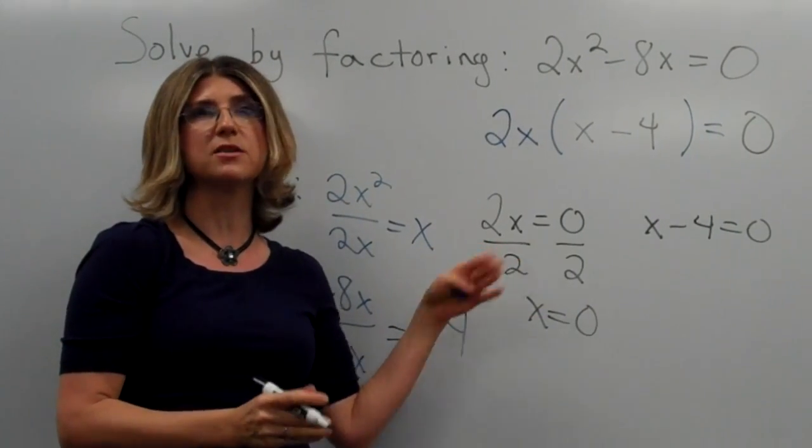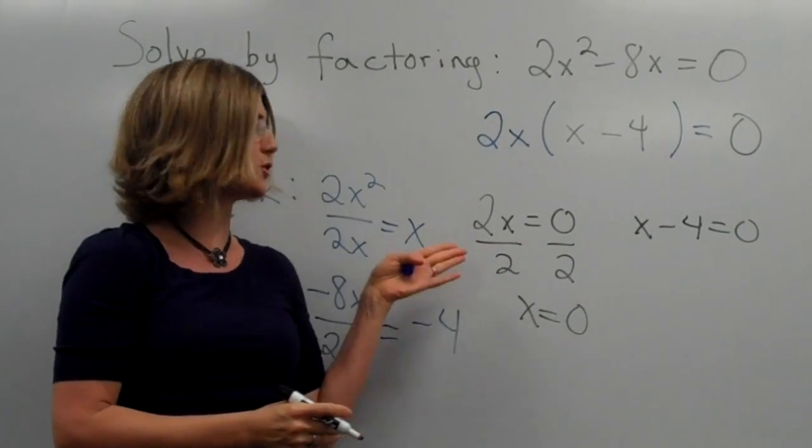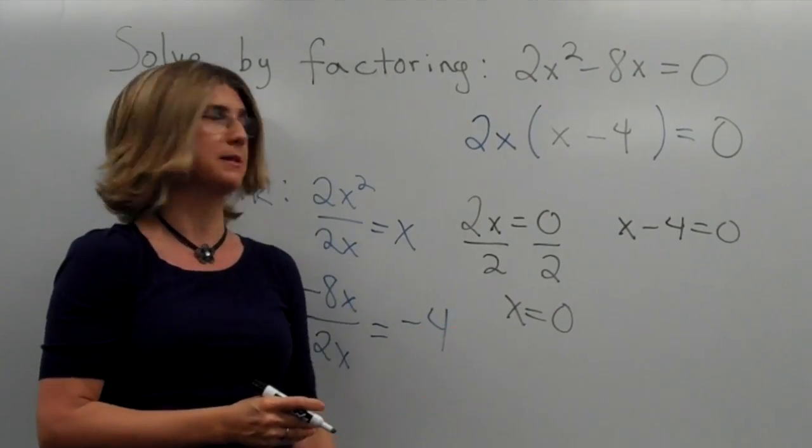Right? If 2 times x is 0, we undo multiplying by 2, so we divide by 2. Of course, we do that on both sides in math.